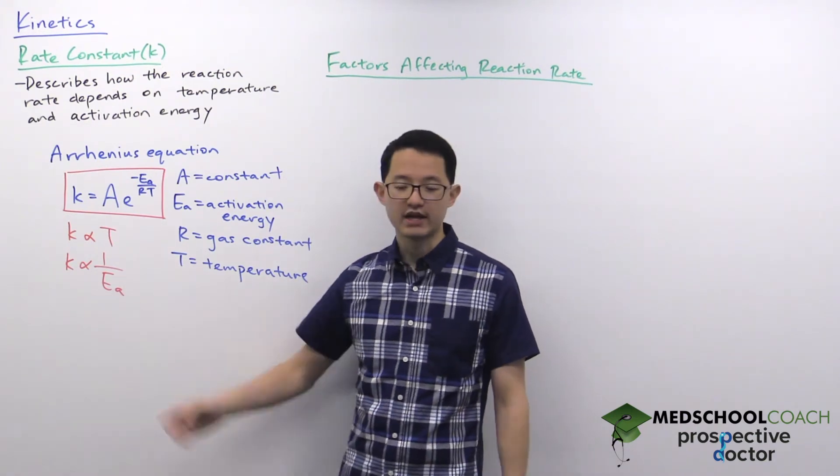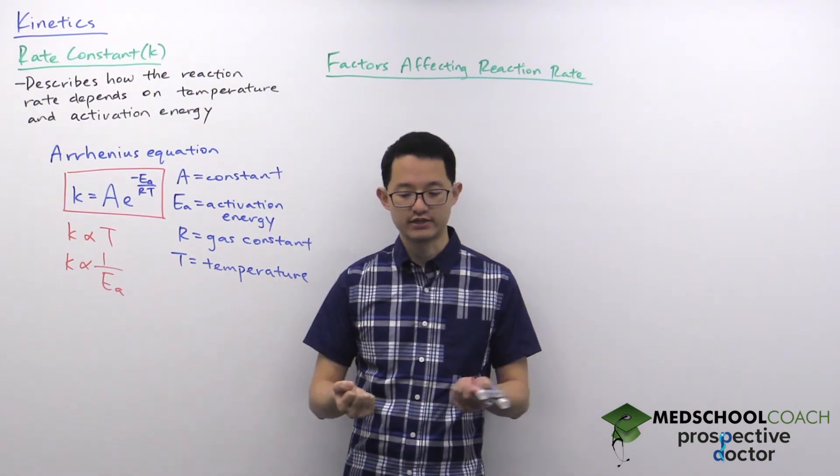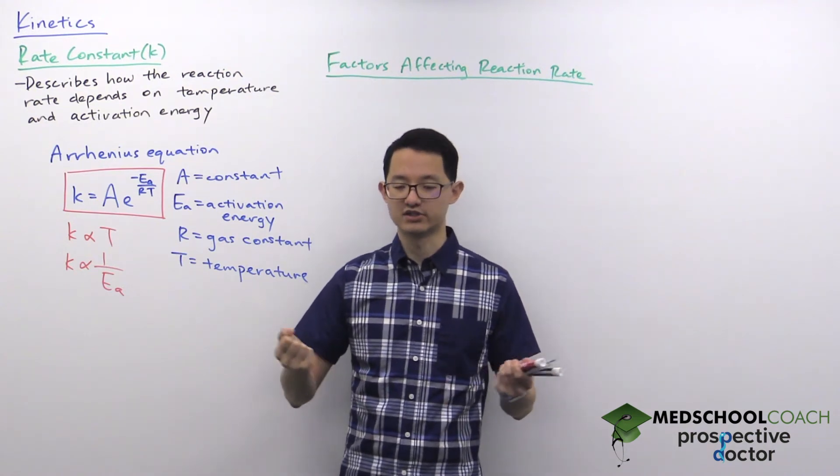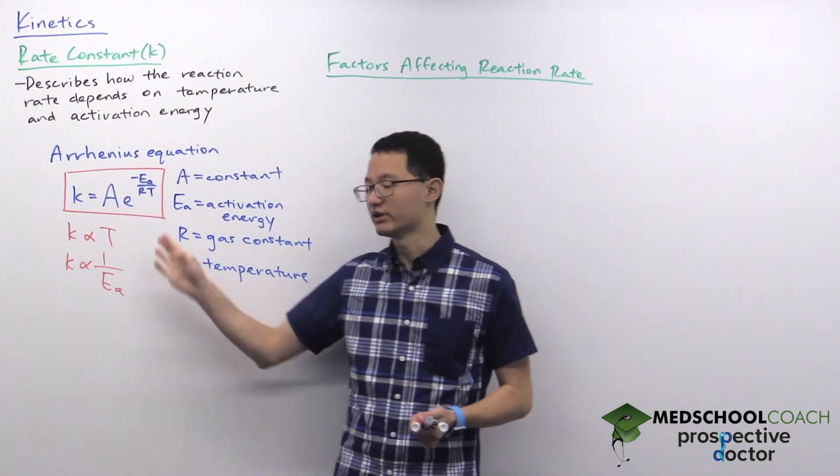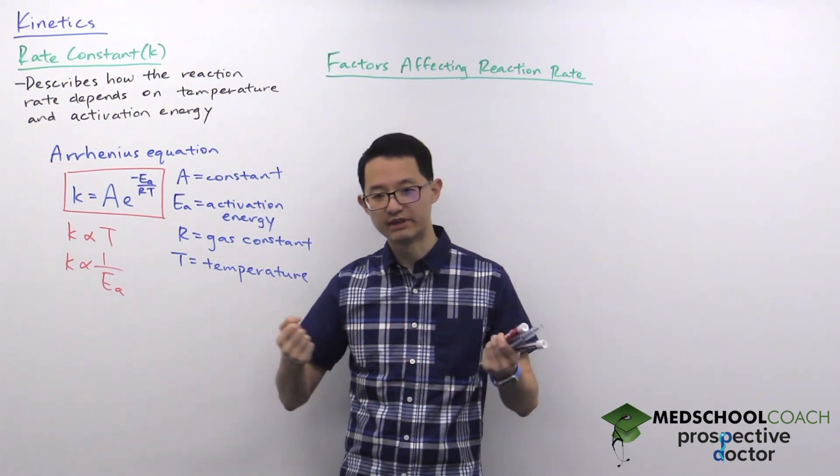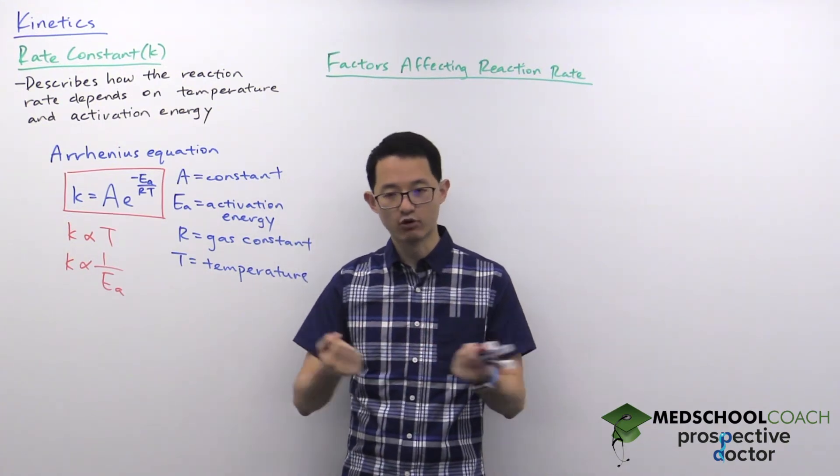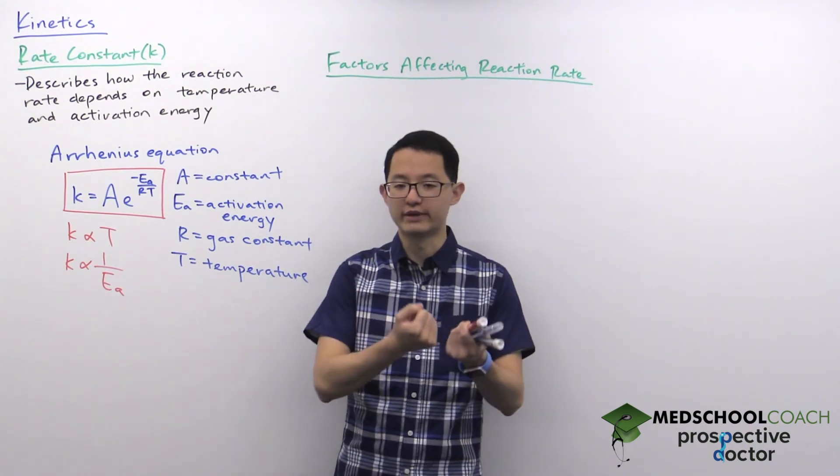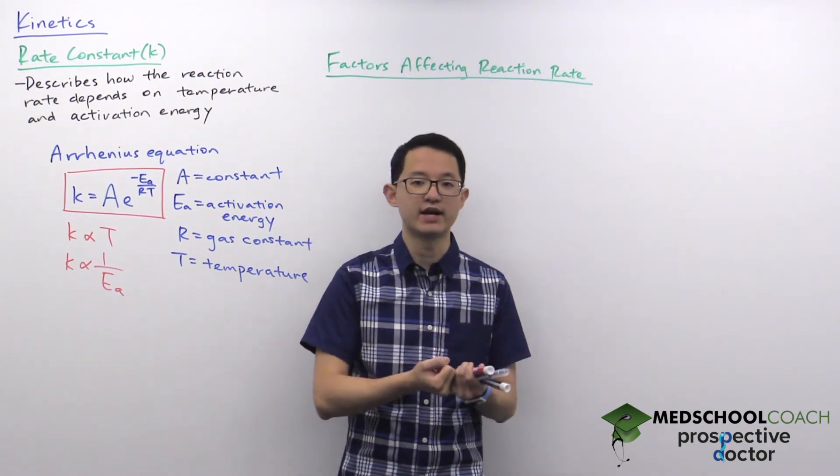When we're looking at chemical reactions, the chemical reactions usually involve molecules colliding with each other in solution. If you increase the temperature, your molecules are going to be moving faster, so there's going to be more collisions. And more collisions will mean more reactions happening, so a faster reaction rate.